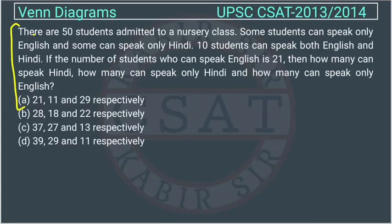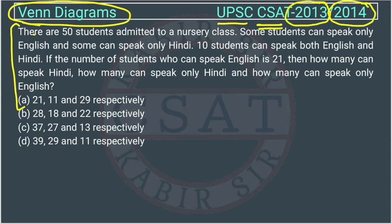This is a question of reasoning from the unit Venn diagram asked by UPSC in the CSAT paper. This question was asked in two years — in 2013 and also in 2014. Previous year questions do repeat in UPSC, so we should always solve the previous year questions.